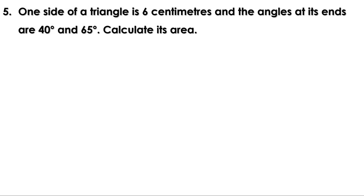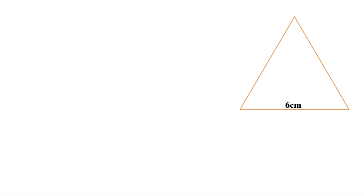Next problem: One side of a triangle is 6 centimeters and the angles at its ends are 40 degrees and 65 degrees. Calculate its area. Let us draw the triangle. One side is 6 centimeters and the angles at the ends are 40 degrees and 65 degrees. Let it be triangle ABC. We need to find the area of this triangle.